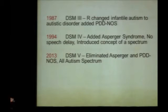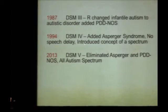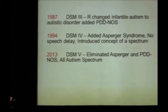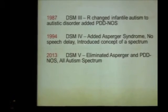That broadened it a little bit. Then in 1994, it was possible to get on the autism spectrum without having speech delay. That was Asperger's — where you have social awkwardness, fixated interest, repetitive behaviors, but no obvious speech delay. That really broadened the spectrum.